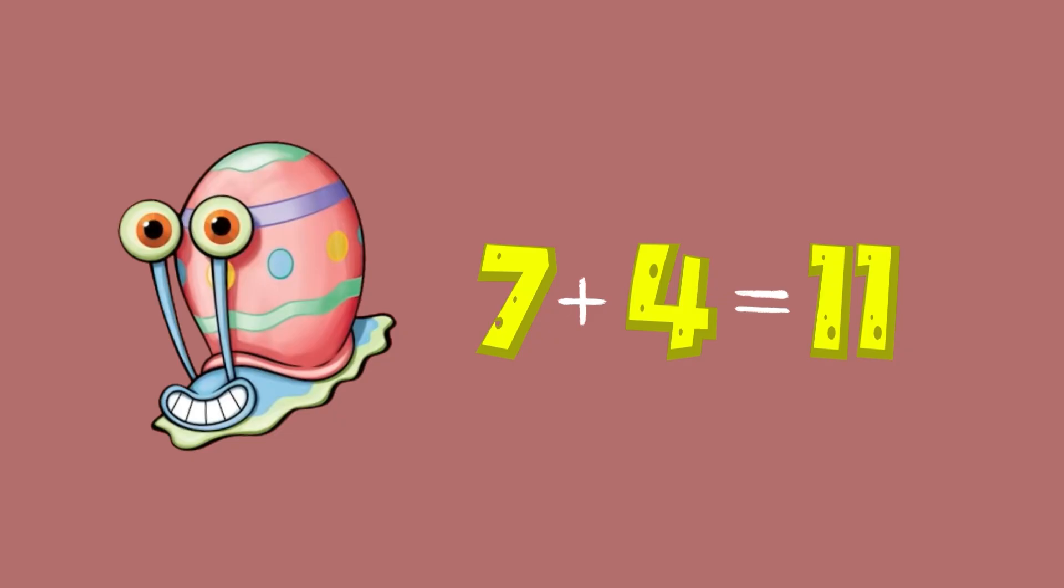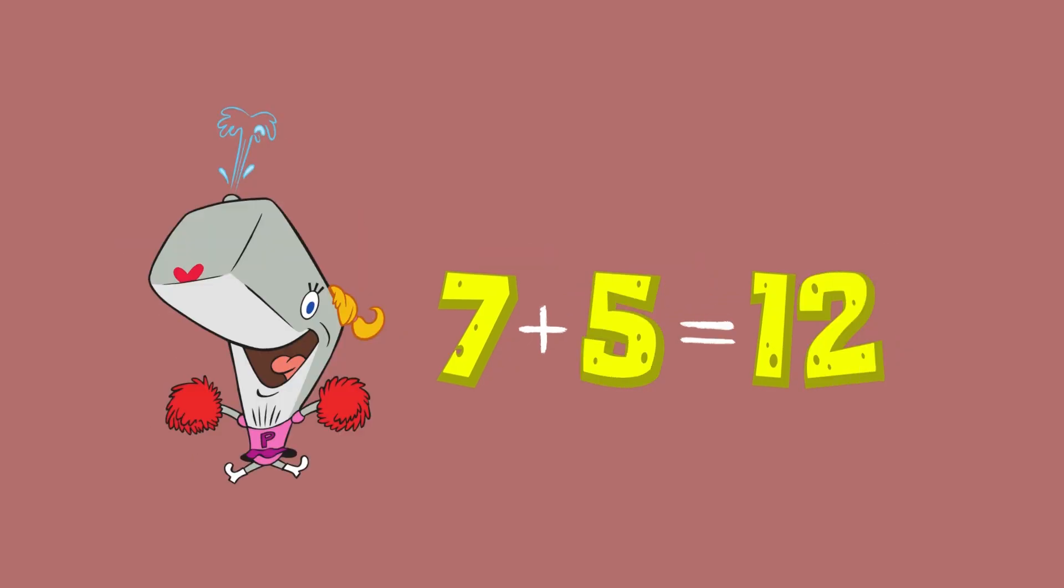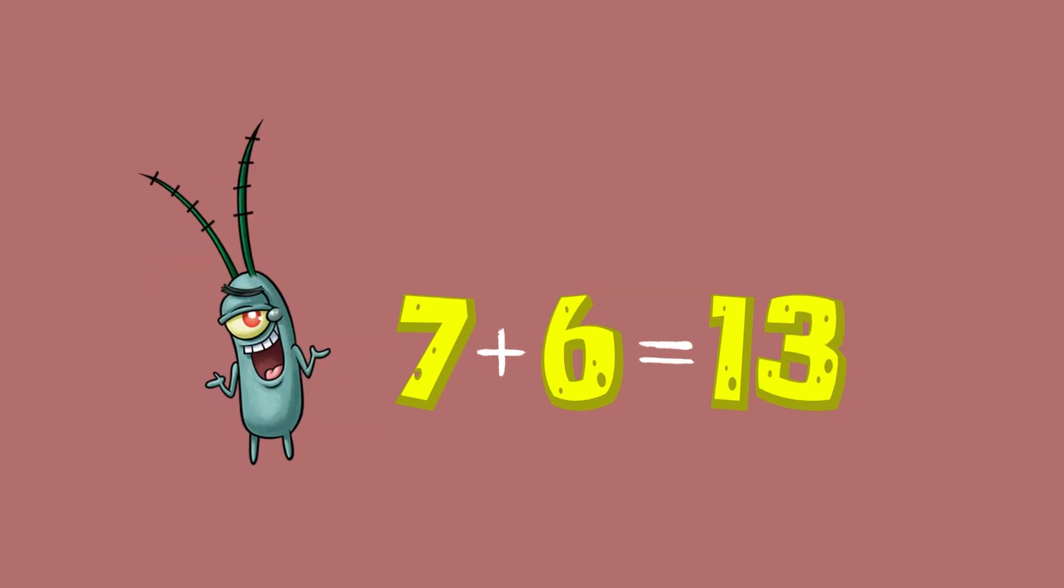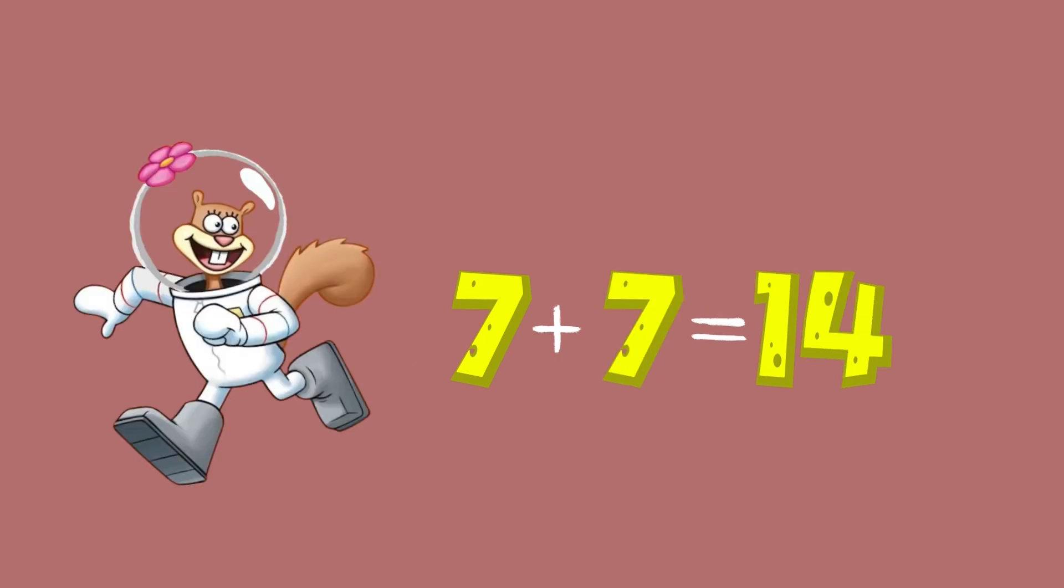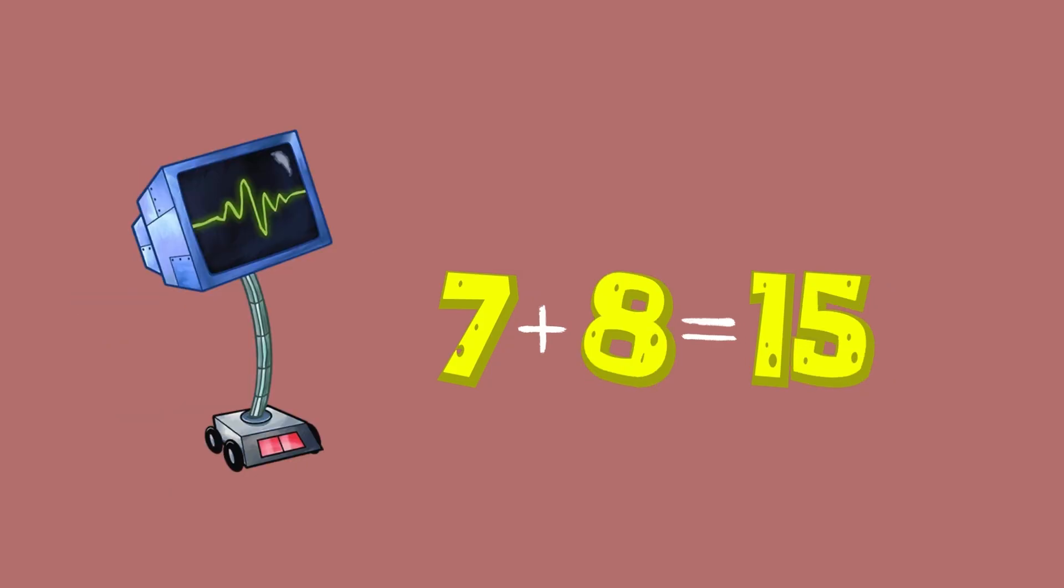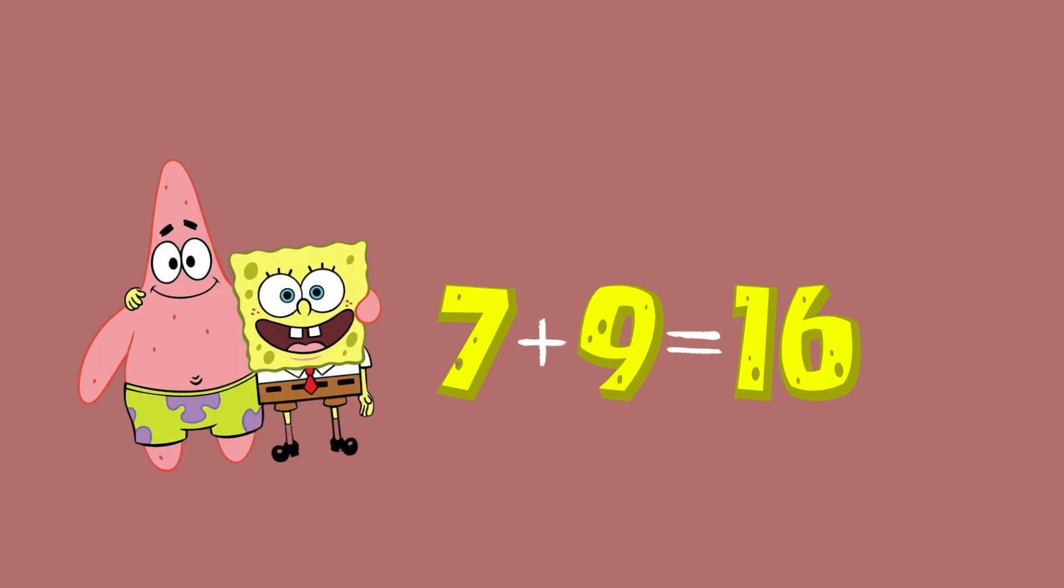Seven plus five equals twelve. Seven plus six equals thirteen. Seven plus seven equals fourteen. Seven plus eight equals fifteen. Seven plus nine equals sixteen.